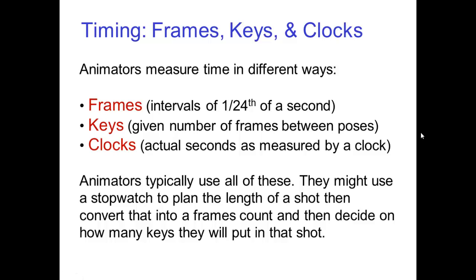Now animators measure time in different ways. There's counting frames, which are typically a 24th of a second in film animation. You can also count keys or key poses for drawings. Finally, you can think about time in terms of actual seconds on a clock. Now animators typically use all of these. They might use a stopwatch to plan the length of a shot, then convert that into a frame count, and then decide on how many key poses they will put into that shot.